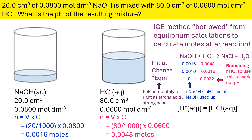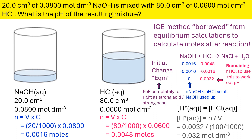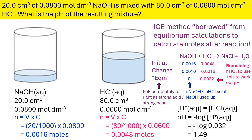Remembering that HCl is a strong acid, it completely dissociates in aqueous solution, so the concentration of HCl can be assumed to be the same as the concentration of H⁺. Doing C equals N over V gives us 0.0032 moles per decimeter cubed for our H⁺ after the two liquids have been mixed together. Putting that through the pH calculation gives us 1.49. Remember to round to two decimal places — this is the convention we use for pH.